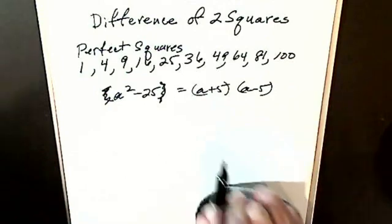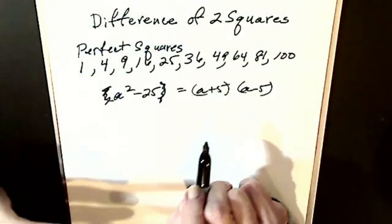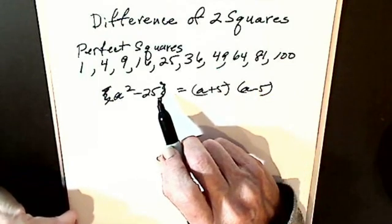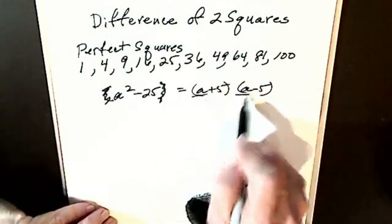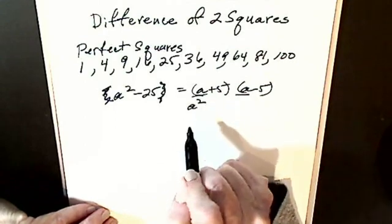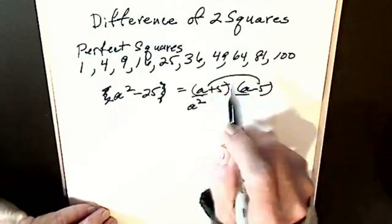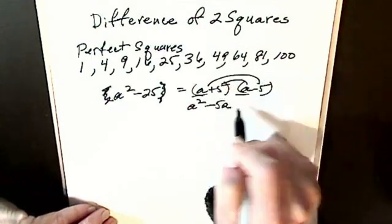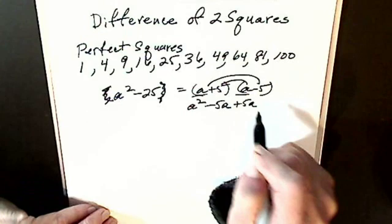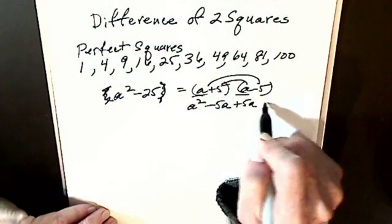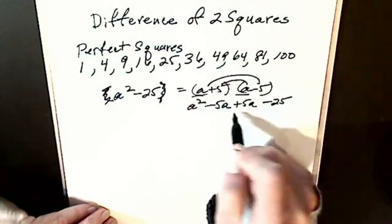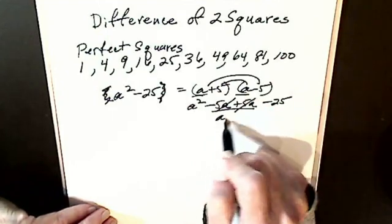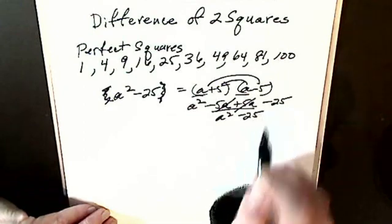I can always check difference of two squares by FOIL. I should be able to multiply these two and get back to here. If I multiply my firsts, I get a squared. If I multiply my outers, I get minus 5a. If I multiply my inners, I get plus 5a. I multiply my lasts, I get minus 25. Outers and inners combined, they go to zero. So I have a squared minus 25.